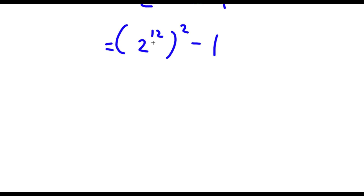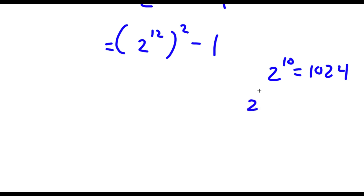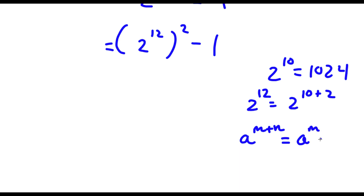Now let's first go ahead and find the exact value of 2 to the power of 12. Well, 2 to the power of 10, we know this is 1024. And 2 to the power of 12 is the same thing as 2 to the power of 10 plus 2. So if I have something in the form a to the power of m plus n, this is the same thing as a to the power of m times a to the power of n.